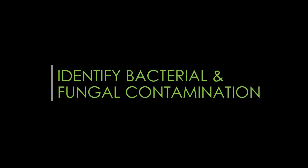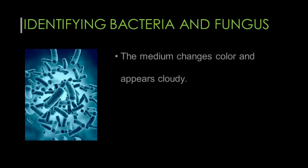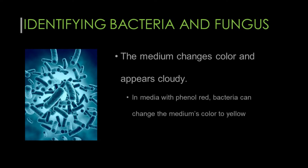How do you identify bacterial and fungal contamination in cell culture? Bacteria and fungi are common contaminants in animal cell culture. Usually their presence can be detected by observing the following changes. The medium changes color and appears cloudy. In media containing phenol red, bacteria can change the medium's color to yellow, but fungi will change the medium's color to pink.